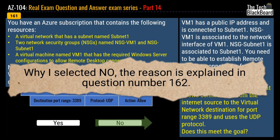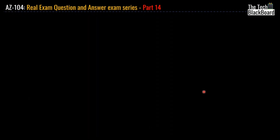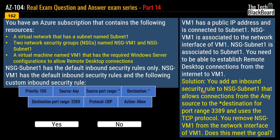To find the correct solution, see question number 162, which has the exact same scenario but a different solution. The solution says you add an inbound security rule to NSG subnet 1 that allows connections from any source to the destination for port 3389 using TCP protocol, and you remove NSG VM1 from the network interface of VM1. The correct answer is yes. NSG subnet 1 is now correctly modified with TCP protocol. Always remember port 3389 should match TCP protocol, not UDP. The change of protocol between the two questions makes 162 yes and 161 no.